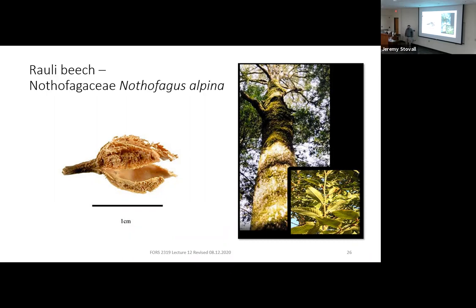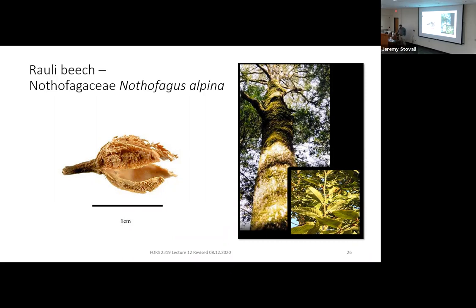Nothofagus alpina — you've got 'alpine' right in the name. It's the most cold-tolerant of the southern beeches, reaching up to higher elevations. It's one of the larger southern beeches and can actually reach 50 meters — about 160 feet — in height. Southern beeches are used as timber species in some of these regions.